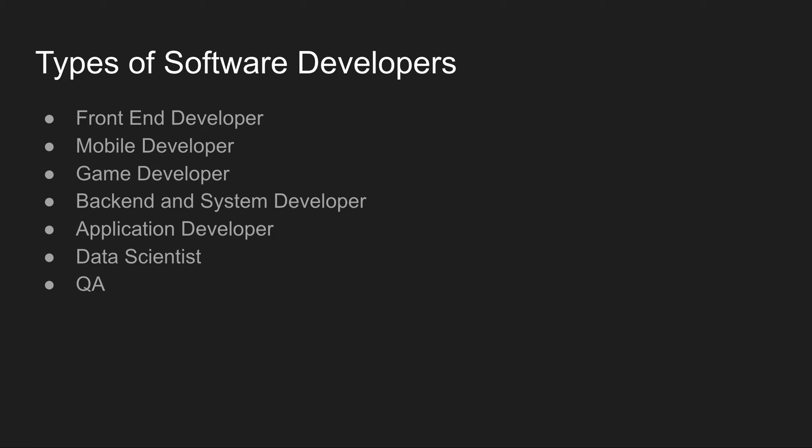Next is QA. QA is one of the most important roles in a software development team. If there is no QA, the software is essentially scrap. QA stands for quality assurance — it means testing the software you have developed for quality. There are two types of testing: automation testing and manual testing.